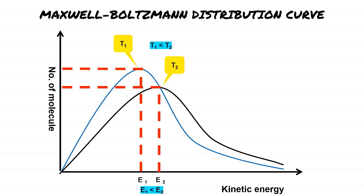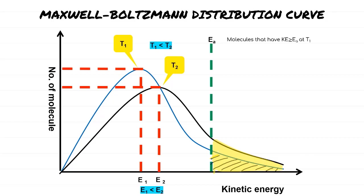From the graph, we can see that T1 is less than T2 and E1 is less than E2. In order for products to form, we need kinetic energy greater than or equal to the activation energy. We mark the activation energy on the graph, and any area that surpasses this activation energy is shaded to differentiate whether molecules are having effective collisions or not.